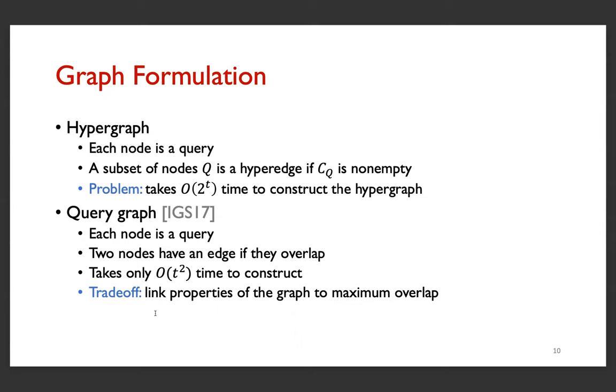Instead, we focus on the query graph. Each node again is a query, and there is an edge between two nodes if they overlap. This only takes T-squared time to construct, but we don't get maximum overlap readily. Instead, we are going to link properties of this graph to maximum overlap.